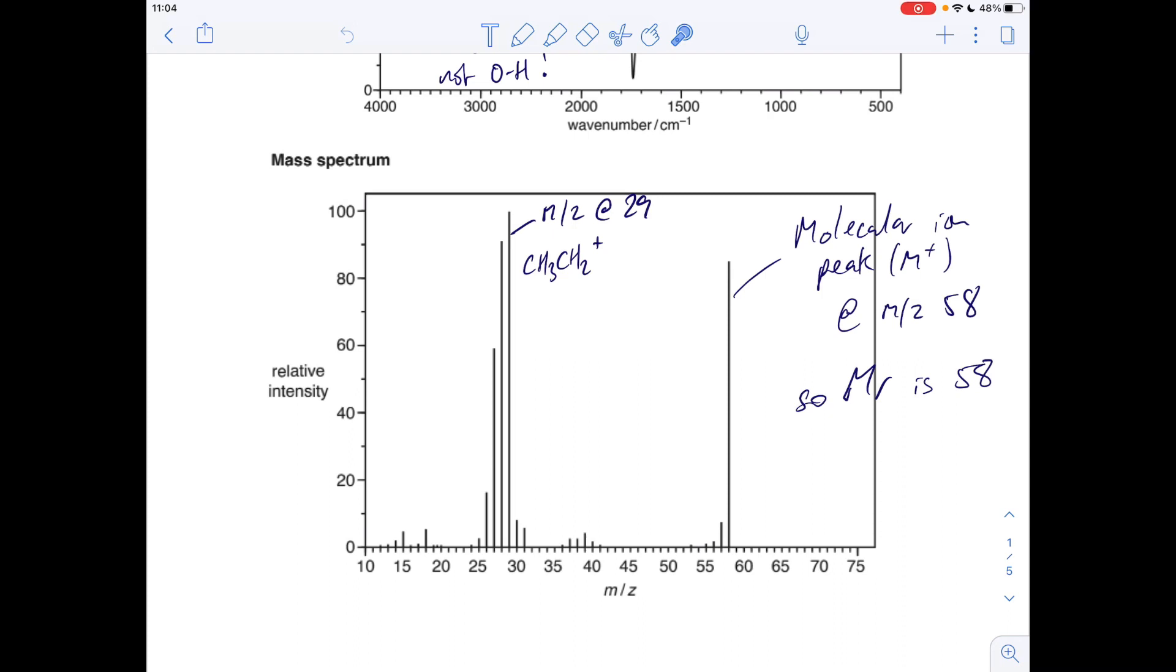The other thing I'm going to look for is a sort of obvious or a common fragment peak. So you can see we've got lots of fragment peaks here but there are some common ones and 29 is a common fragment peak and that's due to an ethyl fragment CH3CH2 plus. So when the original molecule starts to break apart, if an ethyl fragment breaks off and carries the positive charge, it'll be picked up by the mass spectrometer.